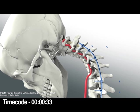After instrumentation, a provisional rod is placed on one side. Then the osteotomies are carried out. If the correction is above C6, the foramen transversarium may be released to prevent kinking of the vertebral artery.